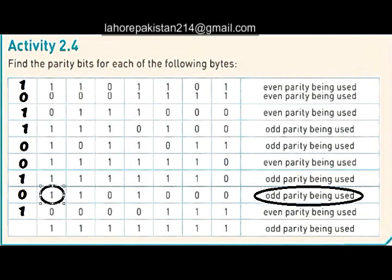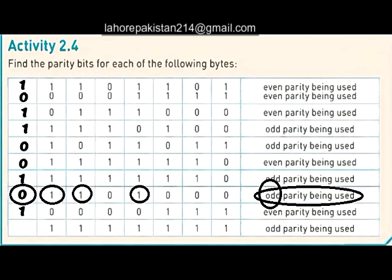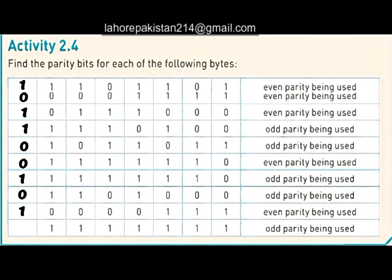Now let's move to the next part. We need to make odd parity. Counting: one, two, three — three is already odd, which is what we need. So we add a zero; we do not need to add one.